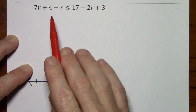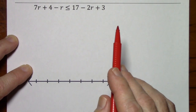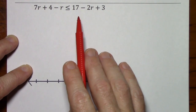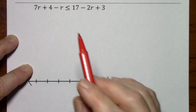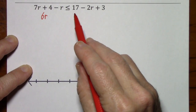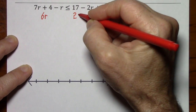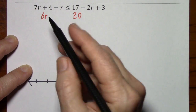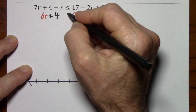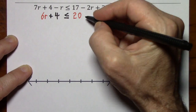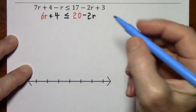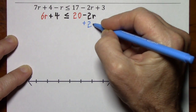With this algebraic inequality, notice we have variables on each side, so we'll need to get them to one side. Let's clean this up first — we can combine two like terms on each side. Combining 7r and negative 1r gives us 6r. Combining positive 17 and positive 3 gives us 20. Bringing down the positive 4, the inequality sign, and the negative 2r. Let's get rid of the negative 2r by adding positive 2r to each side of the inequality.